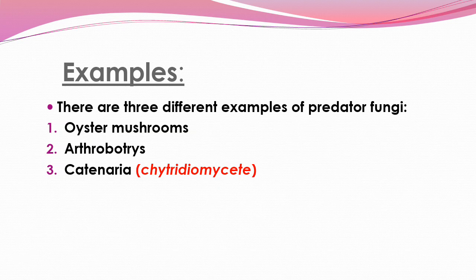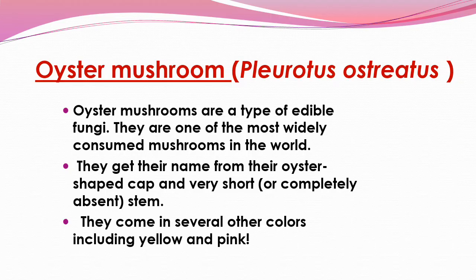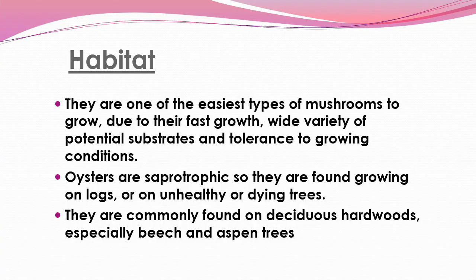There are three different examples of predator fungi. The first one is oyster mushroom. They are a type of edible fungi and one of the most widely consumed mushrooms in the world. They get their name from their oyster-shaped cap and very short stem, and they come in several colors including yellow and pink.